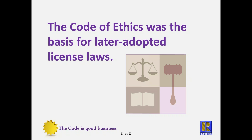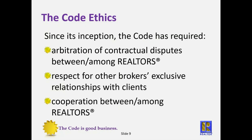In California, licensing started in 1919. We had the code of ethics as of 1913. When they adopted laws in 1919 requiring licensing, a lot of what they put in came out of the original code of ethics from the National Association. Since its inception in 1908, the code of ethics required arbitration of contractual disputes between realtors, respect for other brokers' exclusive relationships with their clients, and cooperation among realtors.